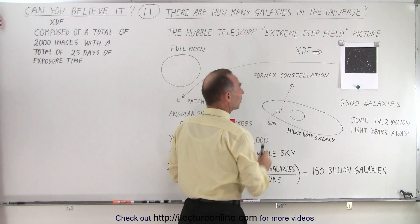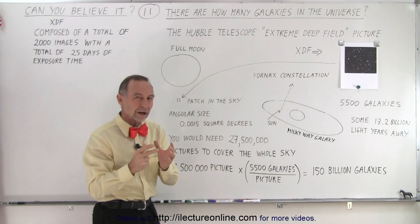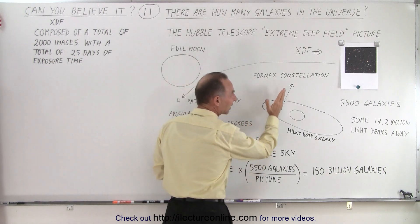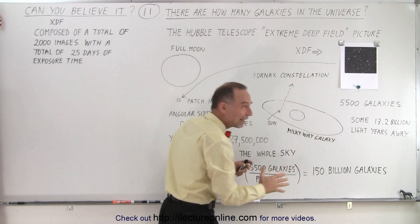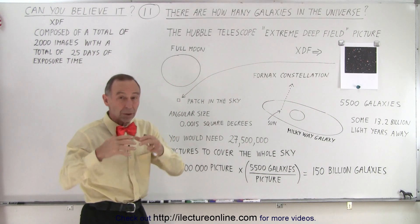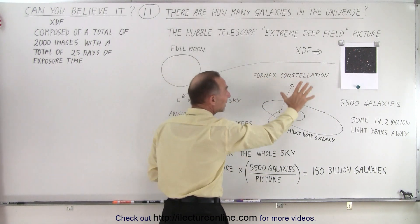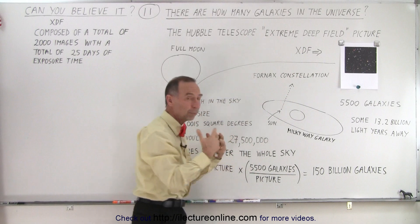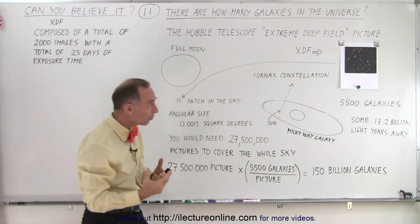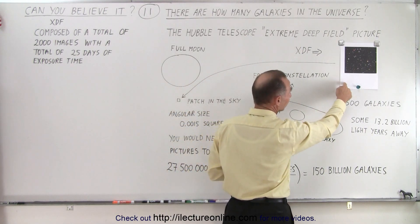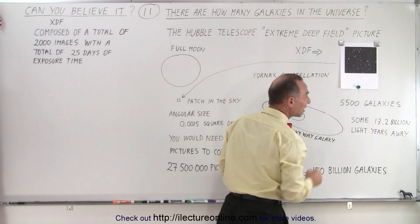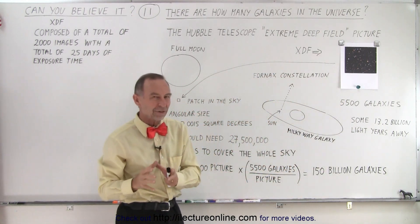And we looked in the direction of the Fornax constellation, because in that direction, we're kind of looking perpendicular to the plane of the galaxy. And so we don't get too many things in the way in our own galaxy to begin with, and there's not too many galaxies nearby in that direction to block our view. The result was this picture right here. This picture contains 5,500 galaxies.